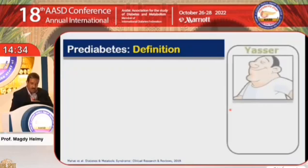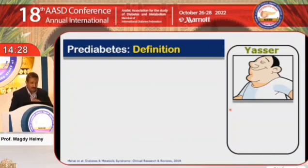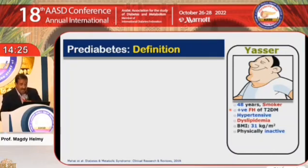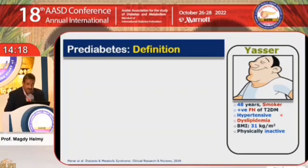Here is the story of Yasser. Yasser is not one of my patients — he is a friend of mine. Yasser is 48 years old, a smoker, with a positive family history of type 2 diabetes, hypertensive, dyslipidemic, BMI of 31 — he is obese — and physically inactive.